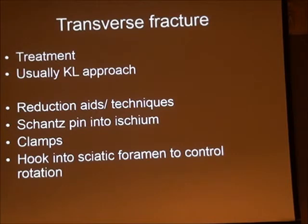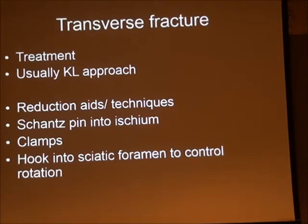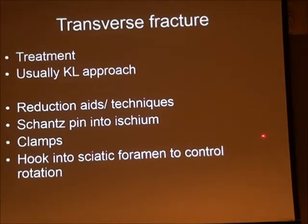Treatment for the majority of transverse fractures is through the Kocher-Langenbeck approach. Various aids and techniques help reduce these fractures — you'll practice in tomorrow's workshops. Useful reduction tools include a Schanz pin into the ischium to derotate the fragment, various offset clamps, and a hook into the sciatic foramen to control inferior displacement and rotation. A combination of these or individual tools can be extremely helpful.